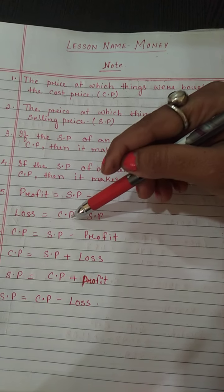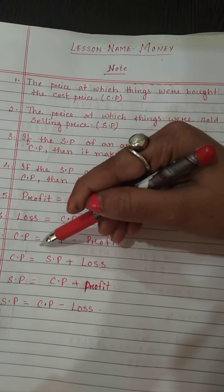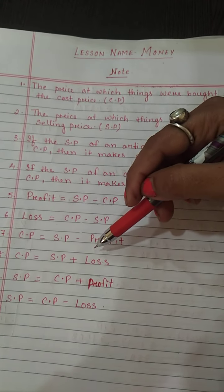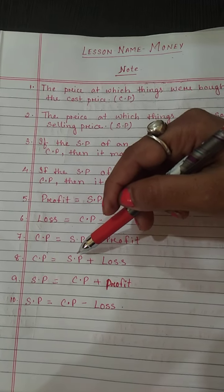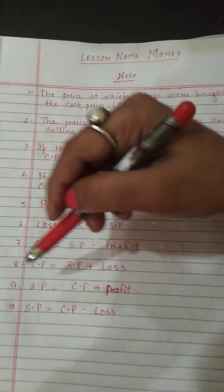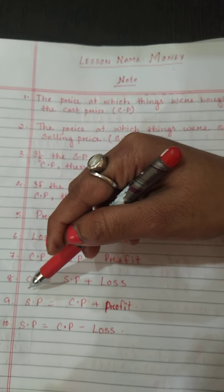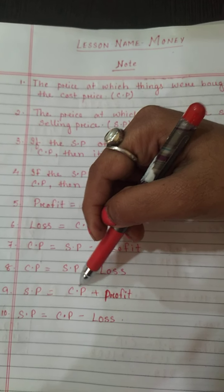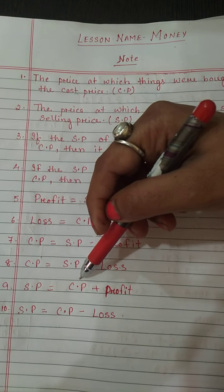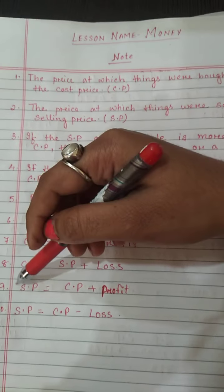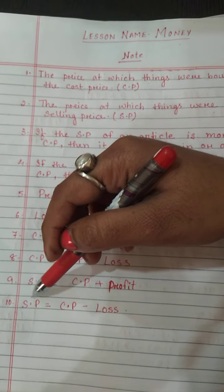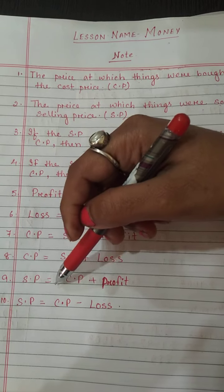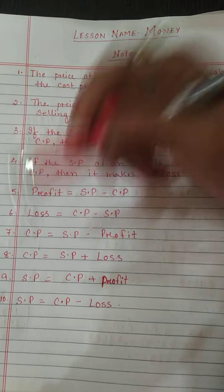When you have to find out cost price and selling price is given and loss is given, your formula will be SP plus Loss. If you have to find out selling price and cost price is given and profit is given, your formula will be CP plus Profit. The last formula: when selling price is not given, CP is given and loss is given, your formula will be CP minus Loss.